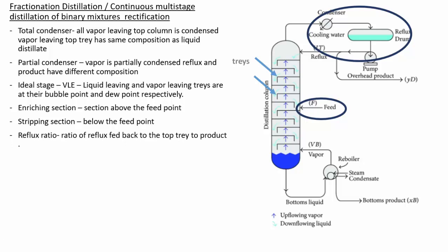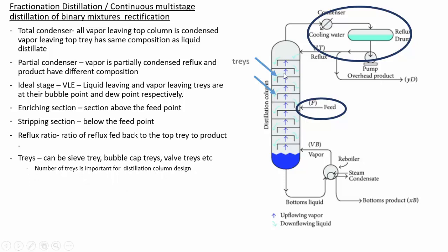The reflux ratio R is the ratio of the reflux returned to the top of the column to the overhead product or distillate: R = L₀ / D. Trays are also an important element; types include sieve trays, bubble cap trays, and valve trays. These trays are specially designed to allow vapor to pass upward, provide contact between vapor and liquid, and allow liquid to pass down through the tray.